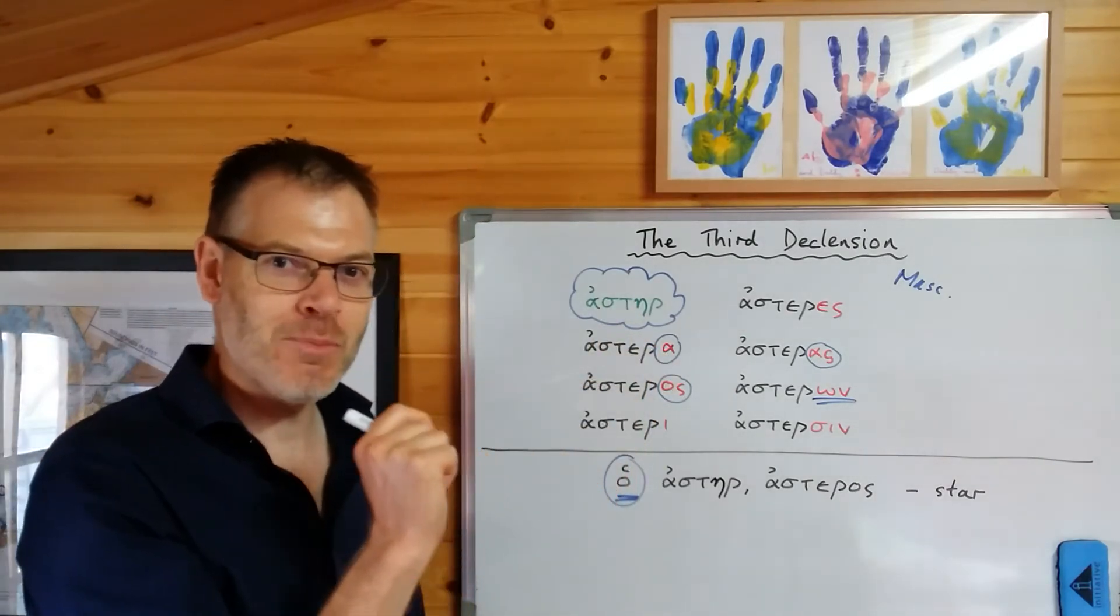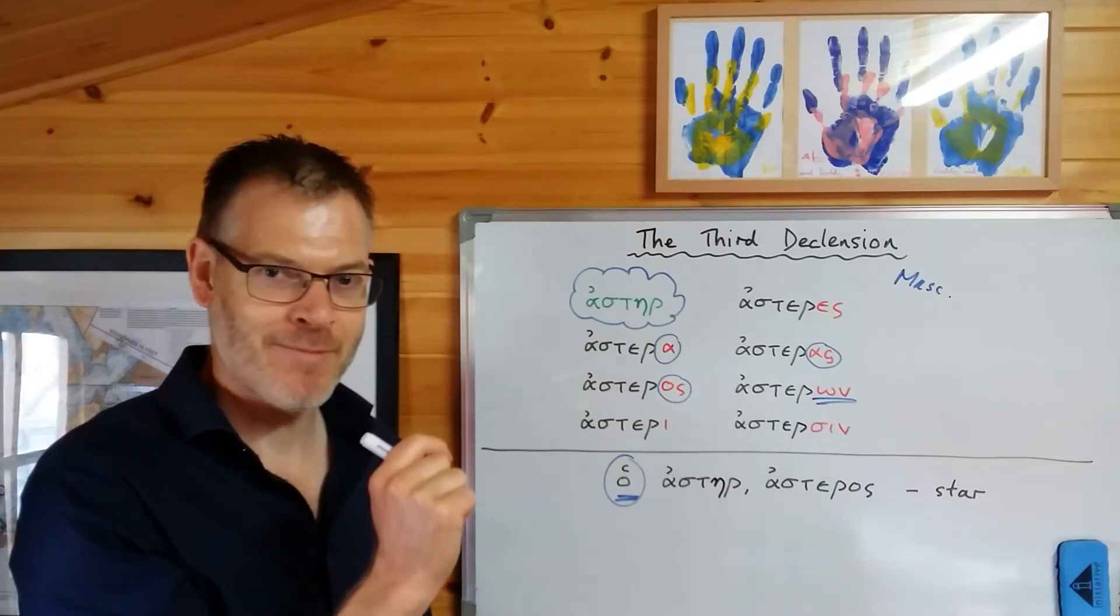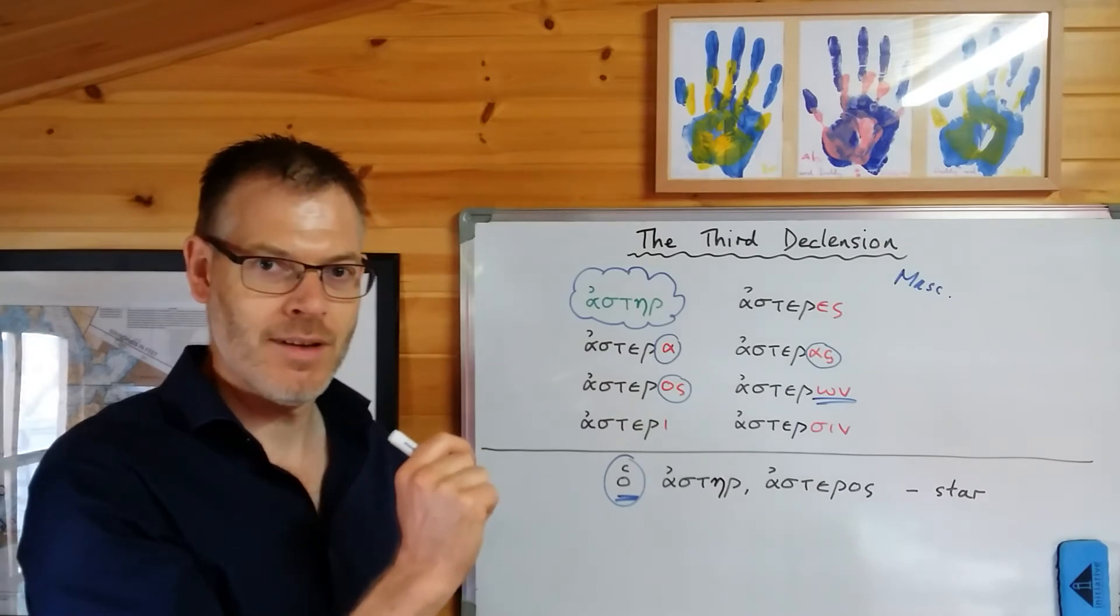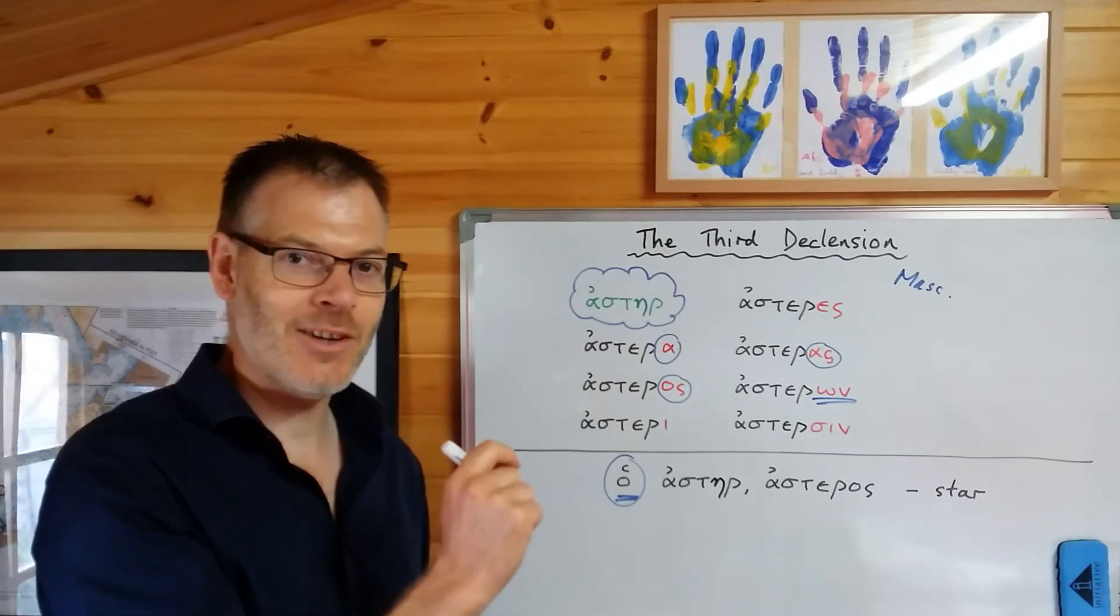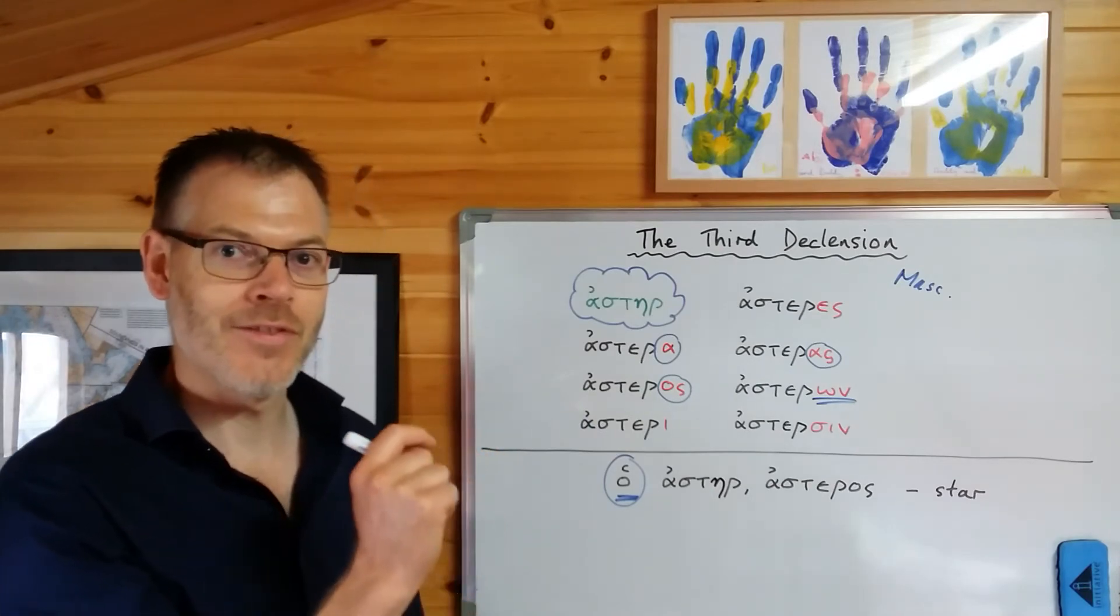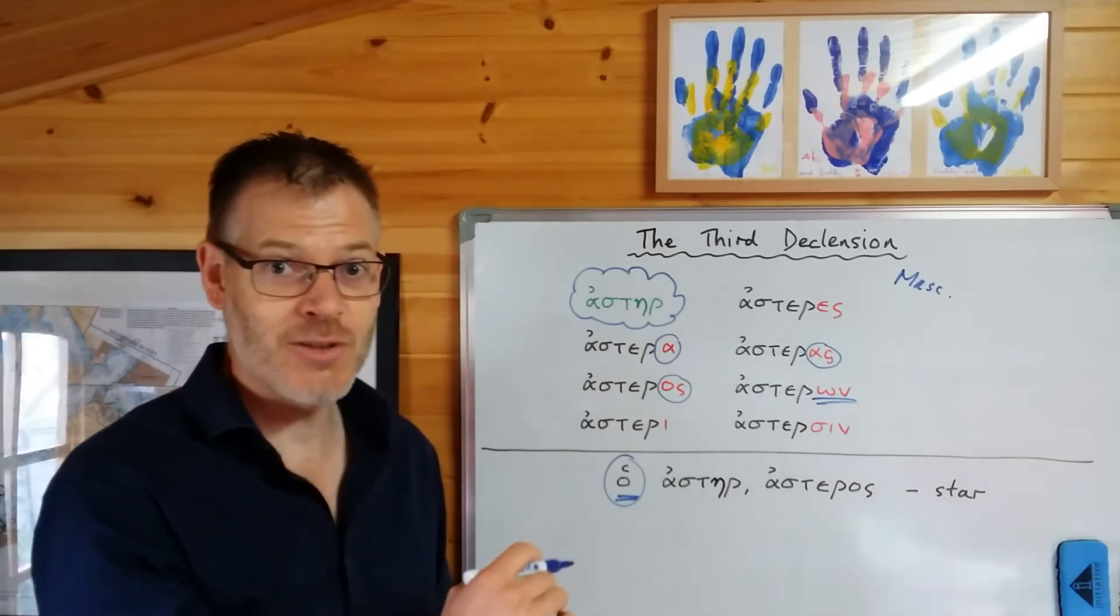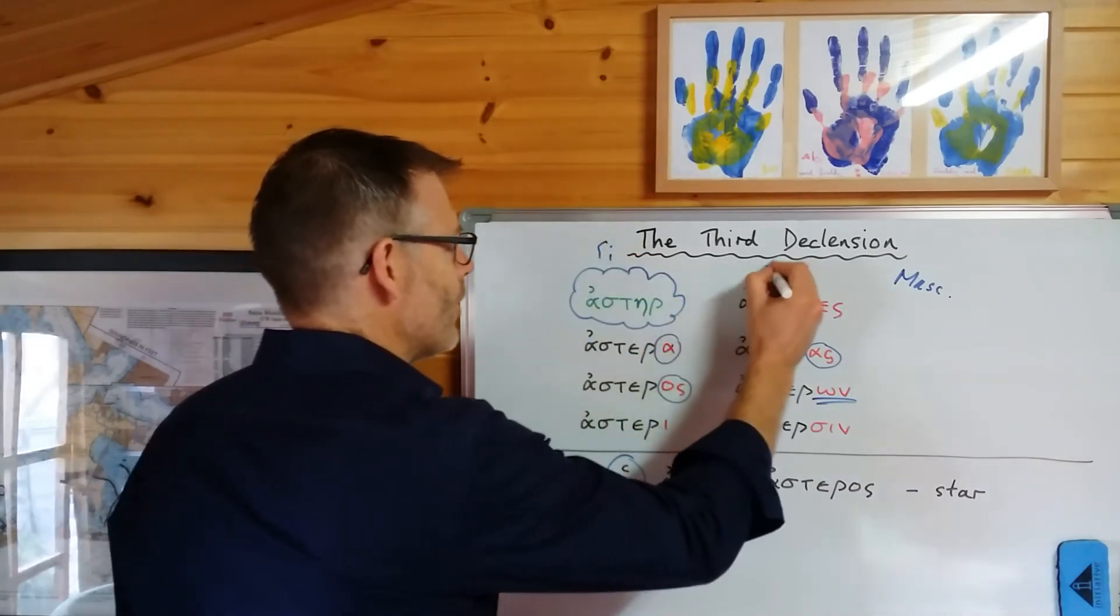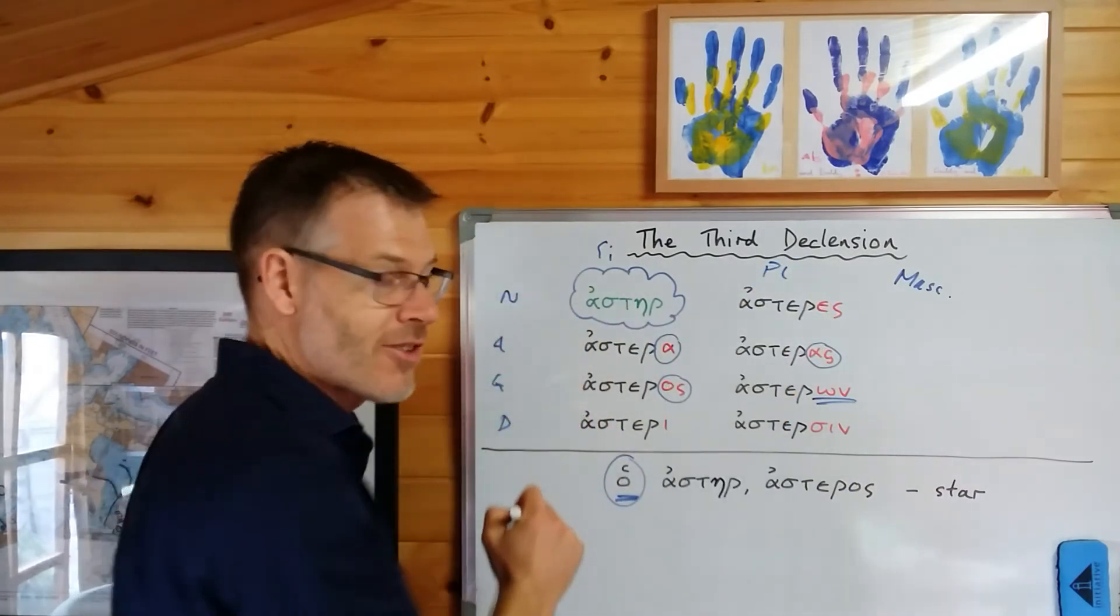The general principle of third declension nouns is that the nominative singular form does not generally include the stem of the noun. The nominative singular could be anything at all. This is singular, oral, nominative, accusative, genitive, dative, as you're expecting.